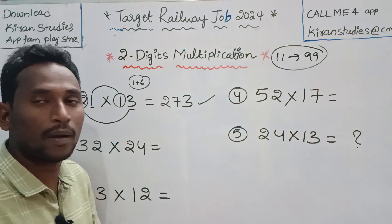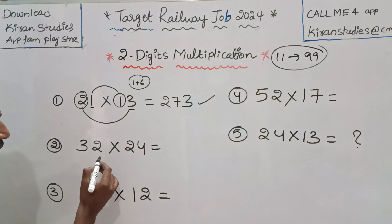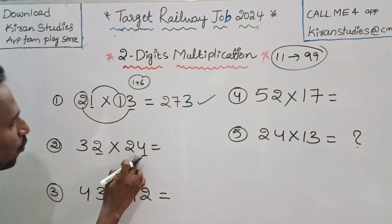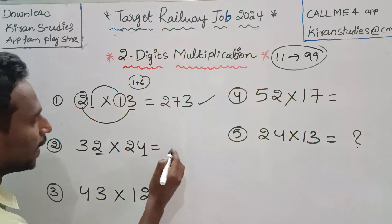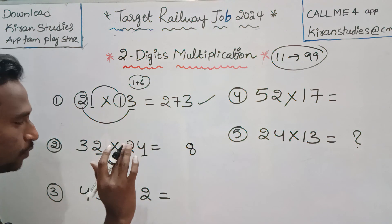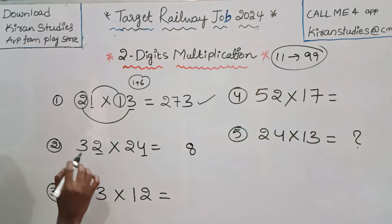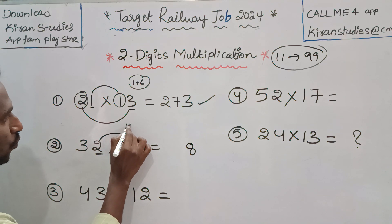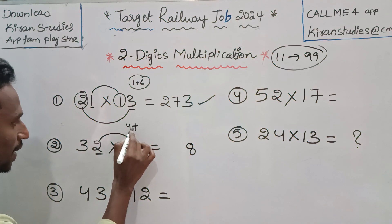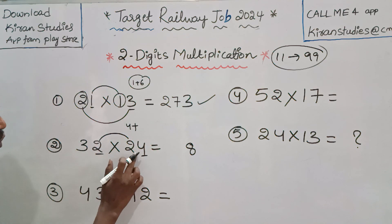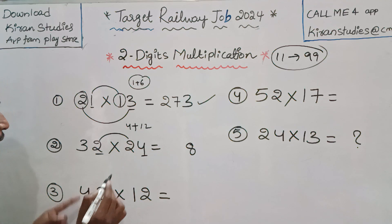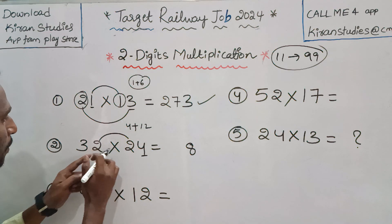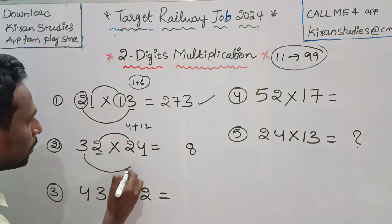They will make the problem easier. First, the unit digits will multiply: 4 times 2 is 8. This is not a carry. Next, the middle numbers will multiply: 2 times 2 is 4, plus 3 times 4 is 12. So we have 12 plus 4. This is the middle numbers and the end numbers will multiply.